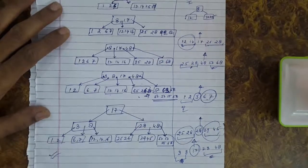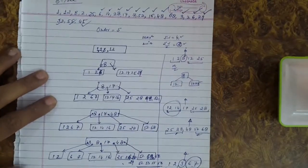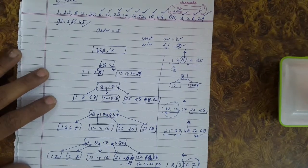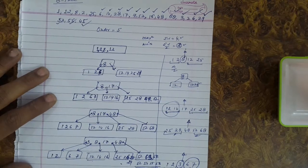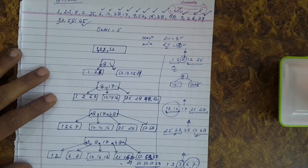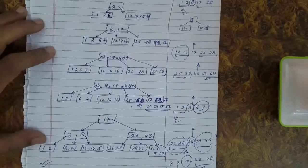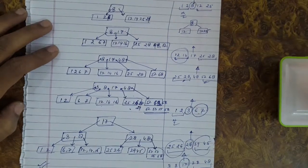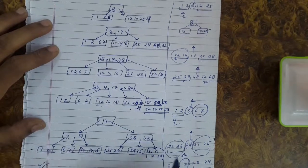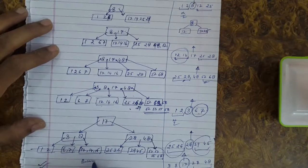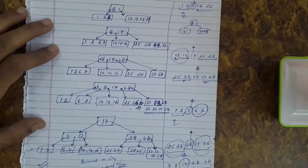This is the resultant B-tree. To summarize: determine the order, then calculate maximum and minimum keys. If the maximum condition is violated, split the node and send the median key upwards — sometimes the tree height grows by 1. Every key insertion is done in the leaf node only, and after all insertions, all leaf nodes lie at the same level. That is why it is a balanced M-way search tree.